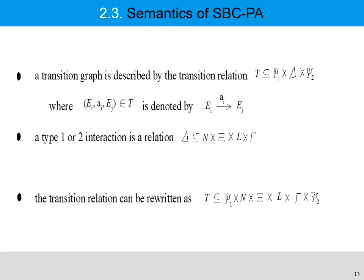There are three attributes: the source state, the interaction attribute, and the target state. Because the interaction is a relation of four attributes, so we conclude that a transition relation can be written as a relation of six attributes.